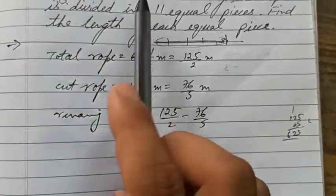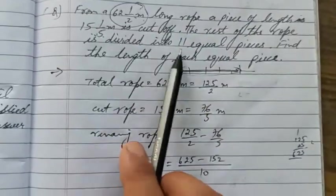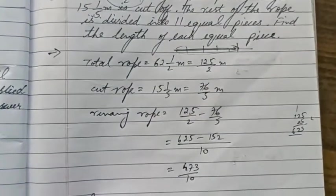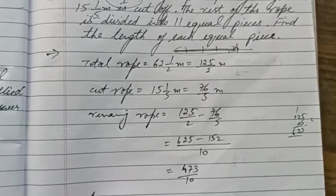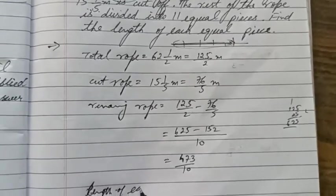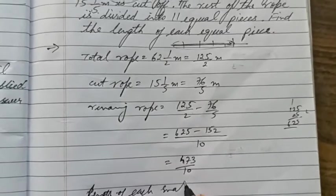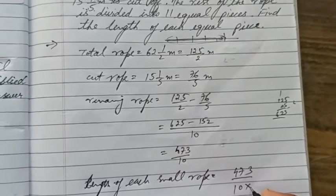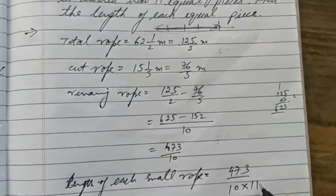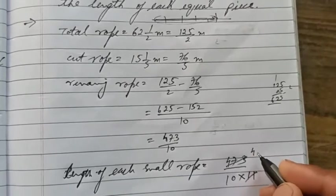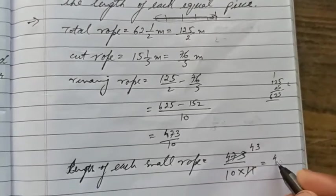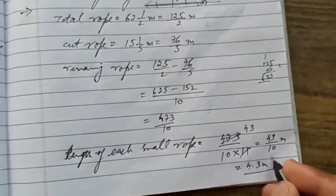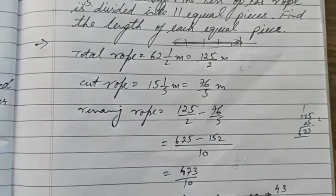This much is left. Now the rest of the rope is divided into 11 equal parts. Length of each small rope - divide this by 11. 473 upon 10 divided by 11. Cancel 11 into 473 is 43, so 43/10 meters or 4.3 meters. I hope you all got that.